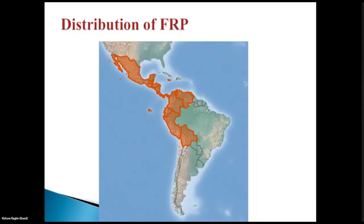This slide shows the map of the distribution of Frosty Pod Rot in Central and South America and in the Caribbean. The little red dot just south of Cuba and east of Hispaniola is Jamaica. That is the distribution map of the Frosty Pod Rot disease.